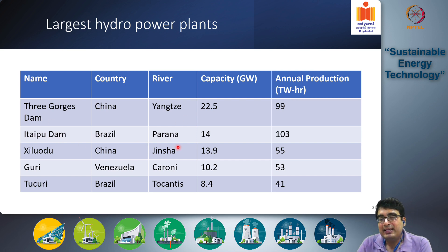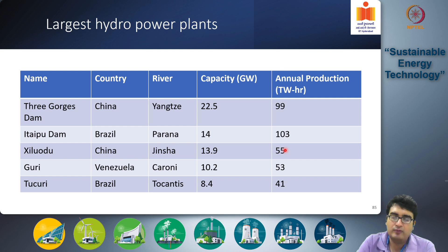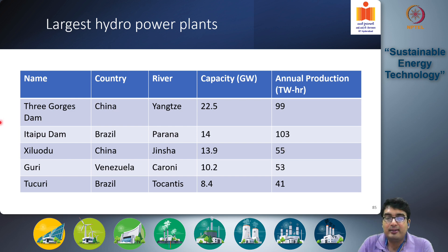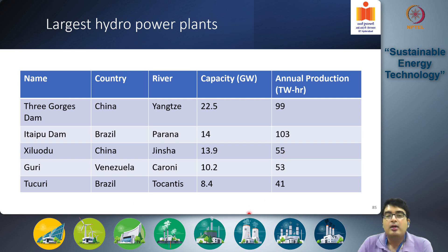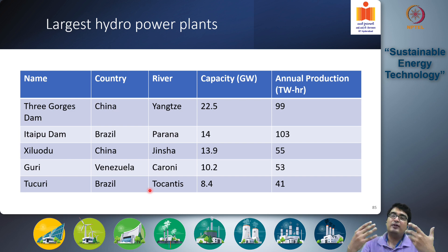The Itaipu Dam in Brazil is the second largest, though this may have changed recently as China has opened up a few larger hydropower dams. Itaipu's annual production is actually larger than Three Gorges because it has a higher capacity factor. So even though Three Gorges is the largest in terms of capacity, Itaipu is the largest in terms of annual production. Then we have Xiluodu in China, with a capacity of 13.9 gigawatts and annual production of 55 TWh, and Guri in Venezuela with a capacity of 10.2 gigawatts and annual production of 53 TWh. Many of these hydroelectric plants are extremely large, with capacities ranging above 10–20 gigawatts and annual production in the hundreds of TWh, enabling very large centralized electricity generation.